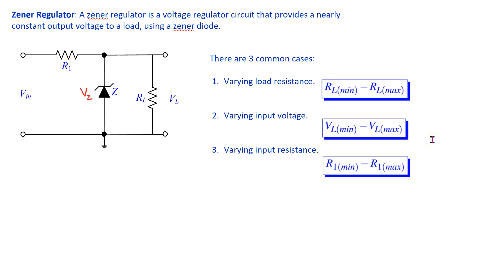In this video we will discuss a Zener regulator. A Zener regulator is a voltage regulator circuit that provides a nearly constant output voltage to a load using a Zener diode.